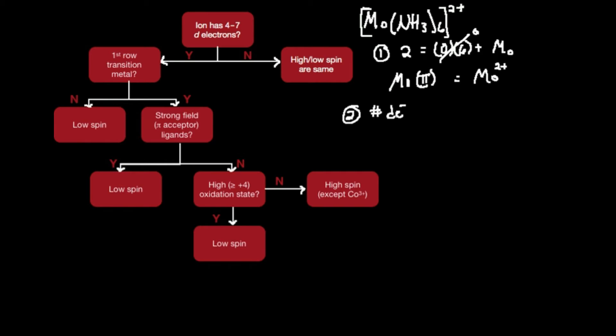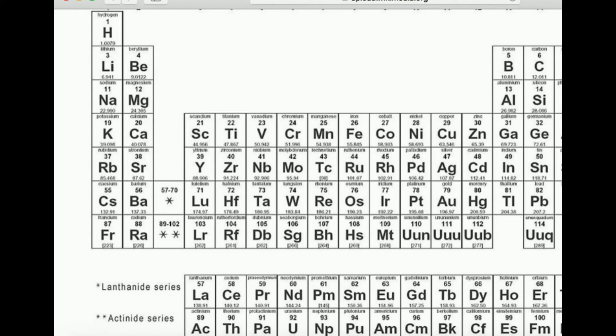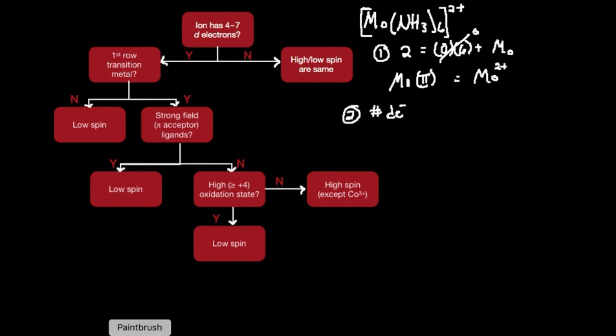Molybdenum 2 plus is going to lose two electrons. It's going to preferentially lose the 5s2 first, which means this one will be gone, this one will be gone, and it will be left with 4 d electrons: 1, 2, 3, and 4. So molybdenum is going to have 4 d electrons.